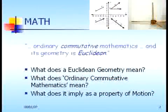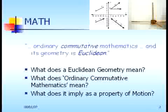Firstly, in the postulates it is mentioned that we use ordinary commutative mathematics and also that the geometry of the universe is Euclidean. So what does Euclidean geometry mean? And what does ordinary commutative mathematics mean? More importantly, what does it imply as a property of motion? This is the thing which we will be trying to understand.